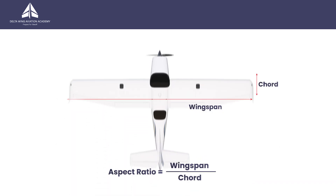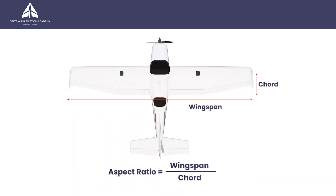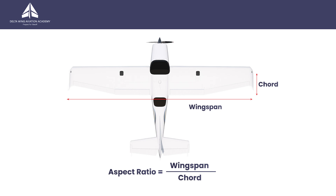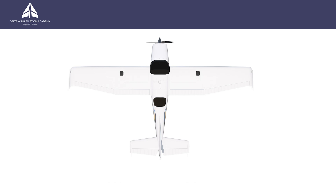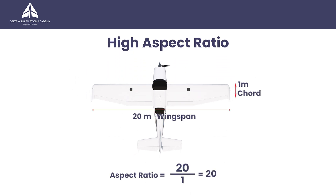This rectangular wing of an aeroplane has an aspect ratio as well. It's defined as the wingspan divided by its chord. If the wing has a 20 metre wingspan and a 1 metre chord, the aspect ratio is 20.